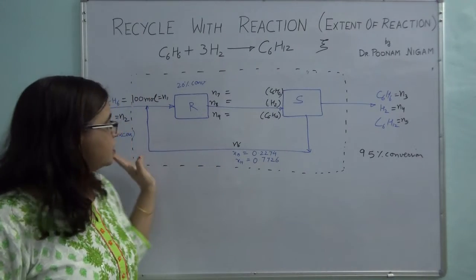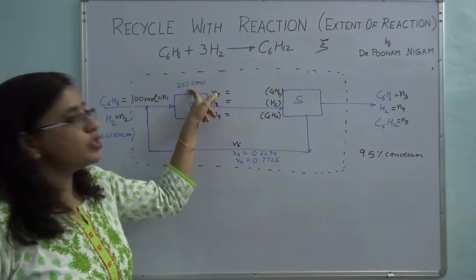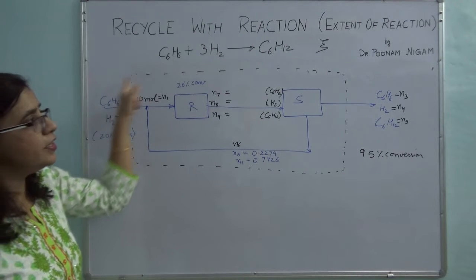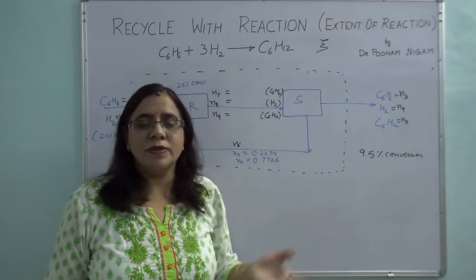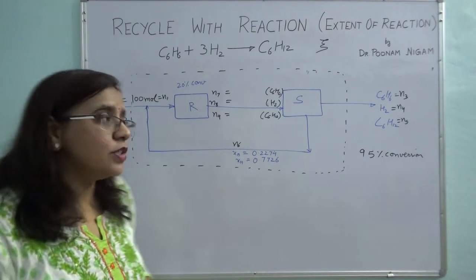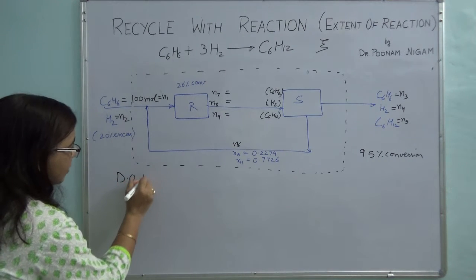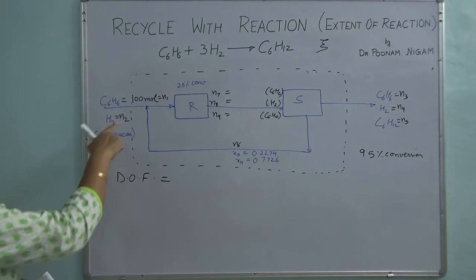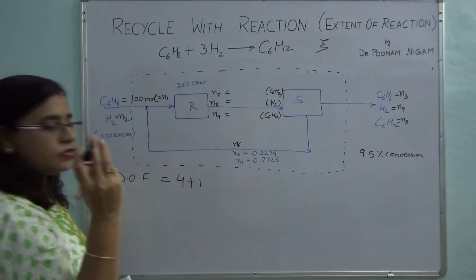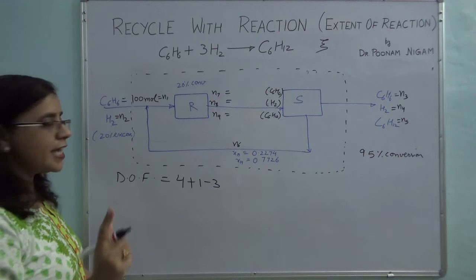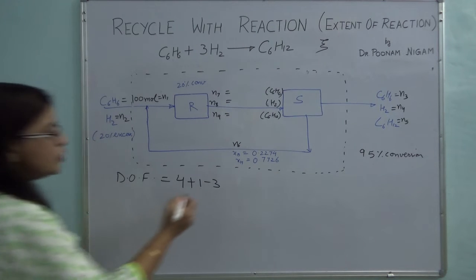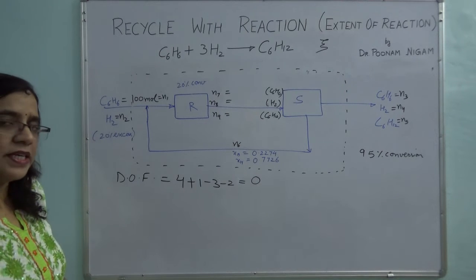I have three process specifications. First, the overall conversion is 95%. Second, conversion per pass is 20%. Third, hydrogen is used 20% in excess. Let's first take the degree of freedom on the overall system. For the overall system, I have four variables: N2, N3, N4, N5. One reaction, three reacting species — so minus three. I have two process specifications: 20% excess hydrogen and 95% overall conversion of benzene. So the overall degree of freedom comes out to be zero.